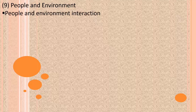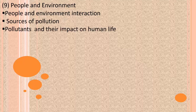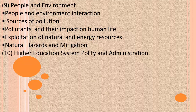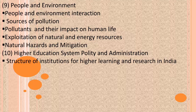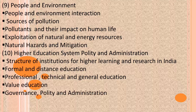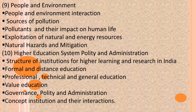Part 9 is People and Environment, which includes people and environment interaction, sources of pollution, pollutants and their impact on human life, exploitation of natural and energy resources, and natural hazards and mitigation. Part 10 is Higher Education System, Quality and Administration, covering the structure of institutions for higher learning and research in India, formal and distance education, professional, technical and general education, value education, governance, quality and administration, and the concept of education and their interactions.